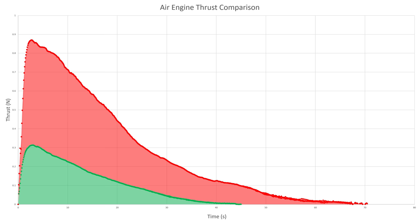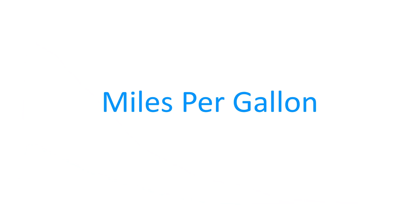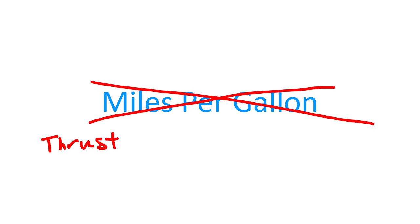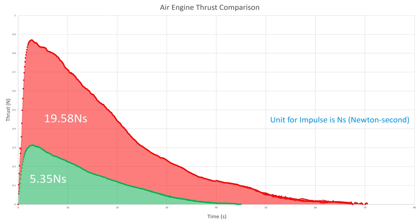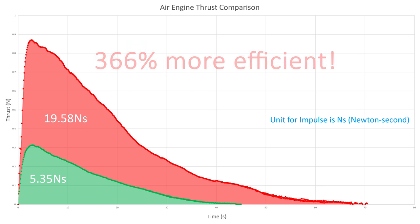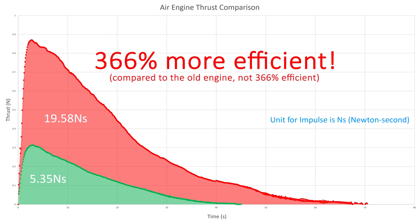This can be used to compare the efficiency of each engine, almost like its miles per gallon, but instead it's thrust time per 2 litre bottle at 60 pounds per square inch, which shows the new engine to be 366% more efficient due to being fully airtight.